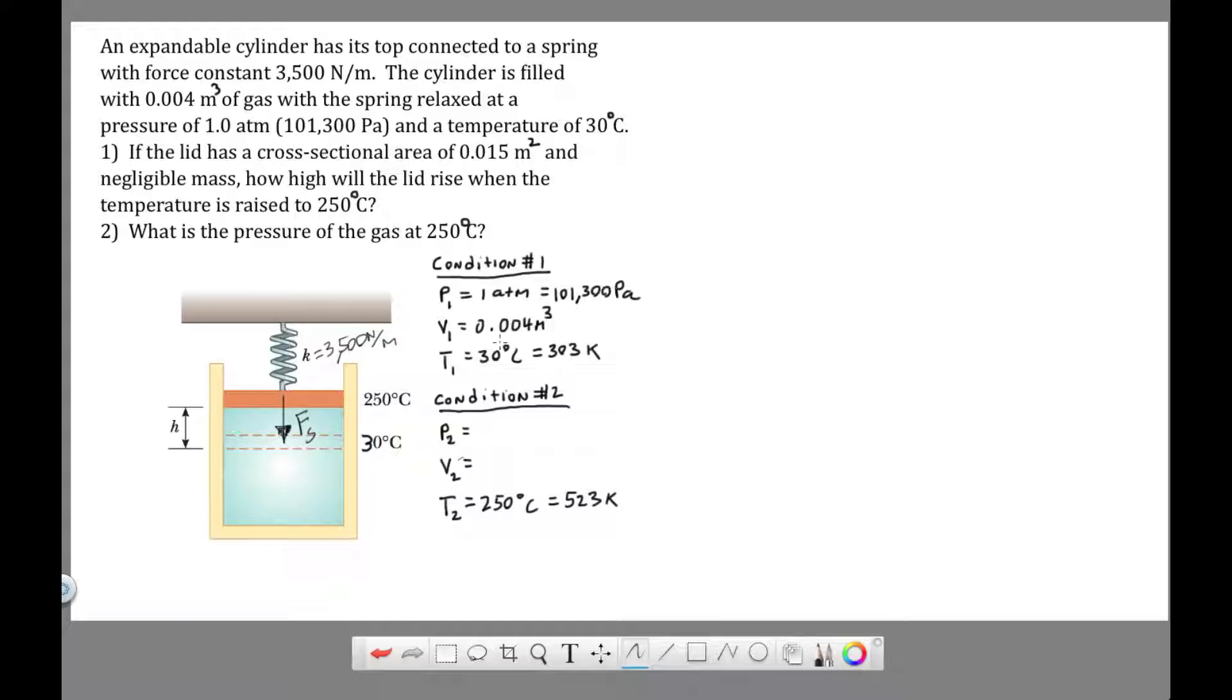So I labeled here condition one and condition two. We're given the starting pressure before the gas begins to heat up. The initial pressure is one atmosphere, which is 101,300 pascals. We're given the starting volume, this area here, which is 0.004 cubic meters. The starting temperature is 30 degrees Celsius, and for gas law problems you always want to be in Kelvin, so add 273 to get 303 Kelvin.